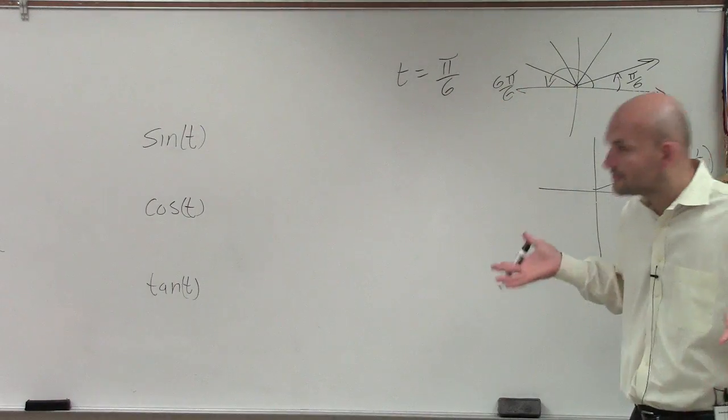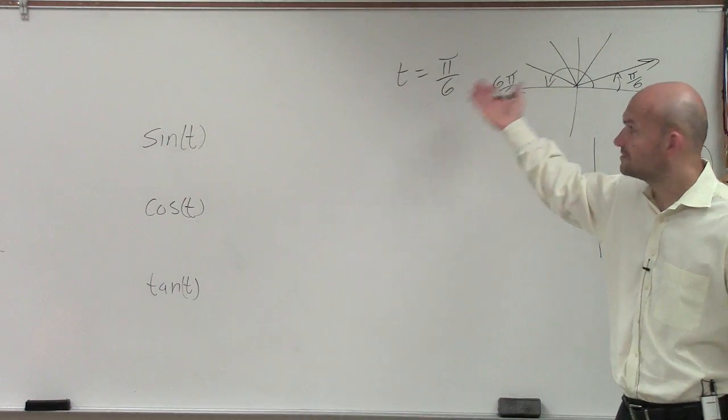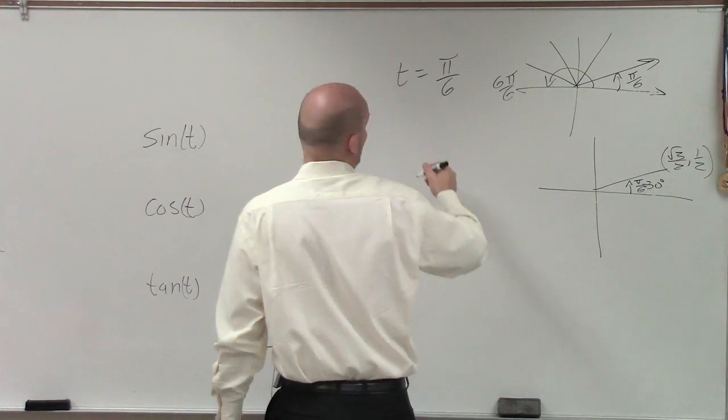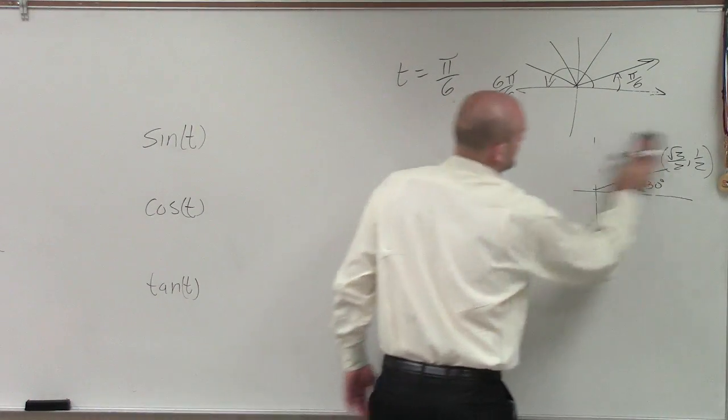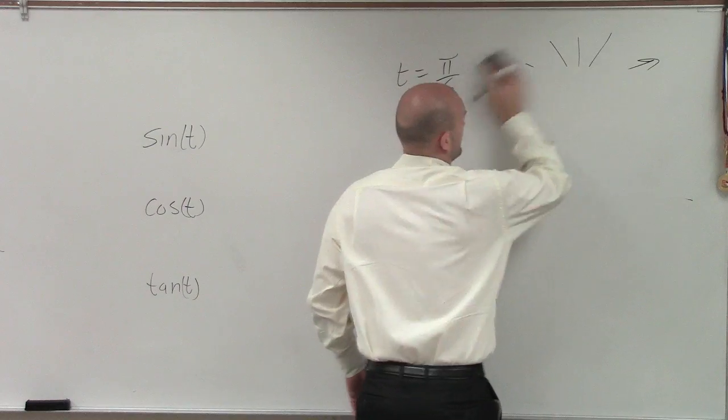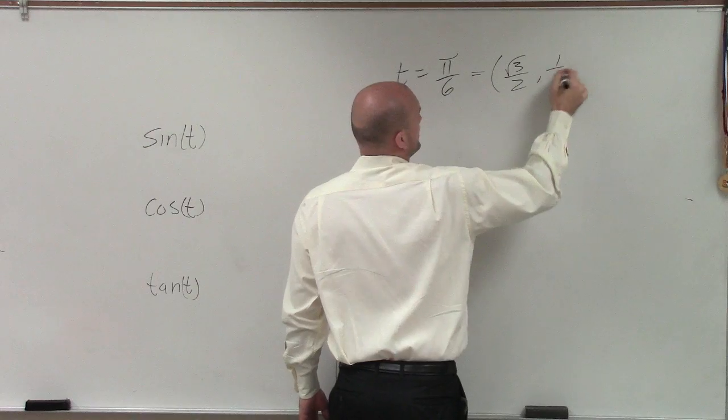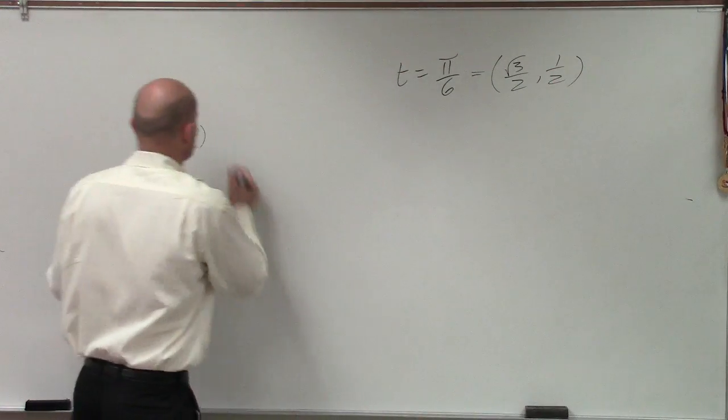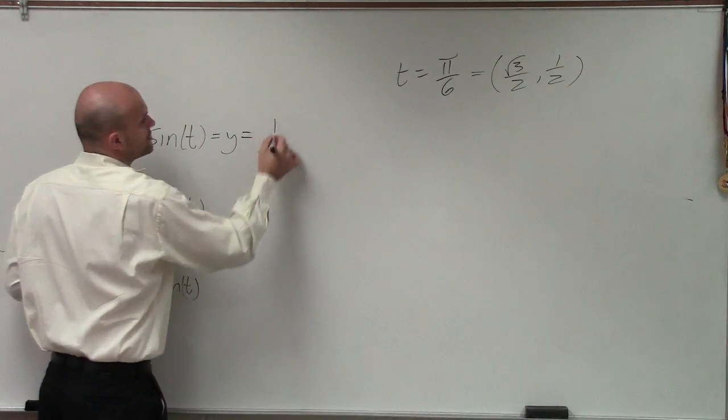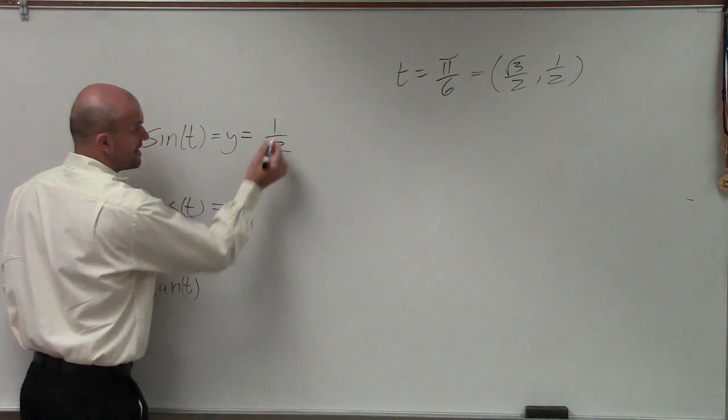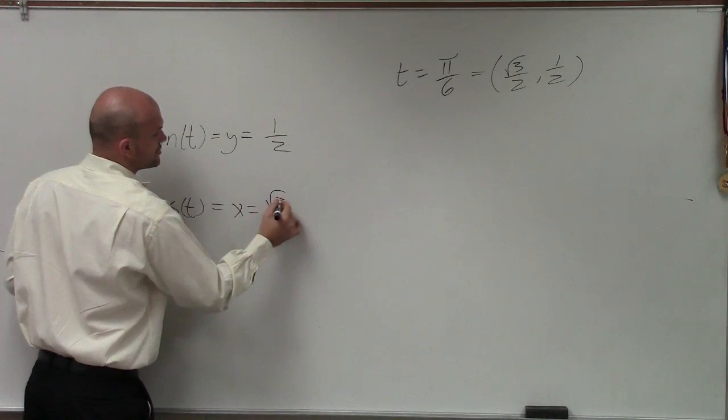So sine, cosine, they're very basic, right? The y-coordinate. So we know that this point on the unit circle is square root of 3 over 2 comma 1 half. So the sine is equal to my y value, which is equal to 1 half. Cosine is equal to my x value, which equals square root of 3 over 2.